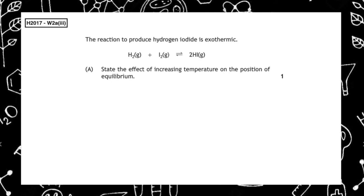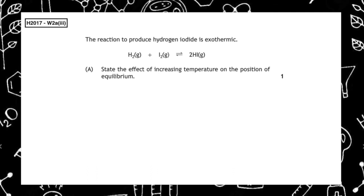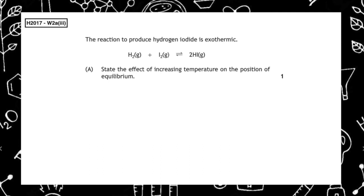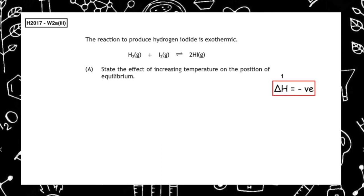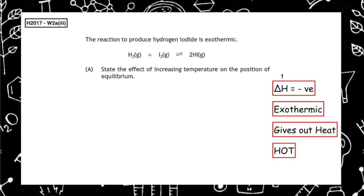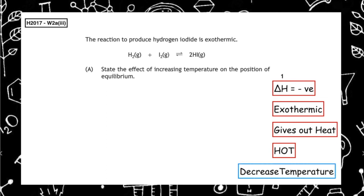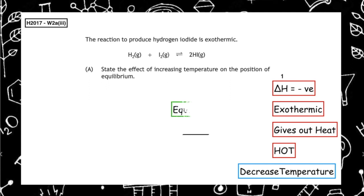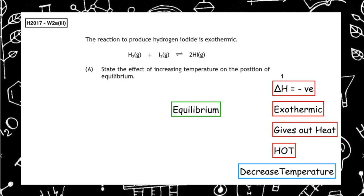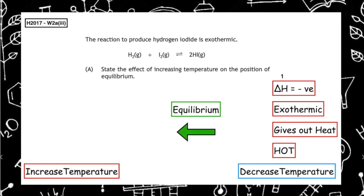This past paper question is from the Higher 2017, written question part A. The reaction to produce hydrogen iodide is exothermic, and part A asks us to state the effect of increasing temperature on the position of the equilibrium. Since the forward reaction is delta negative — exothermic, giving out heat energy — it is a hot reaction. We would normally decrease the temperature to shift the equilibrium to the right to make more hydrogen iodide. However, since the question says we are increasing the temperature, it pushes the equilibrium in the opposite direction — shifting the position of equilibrium to the left.